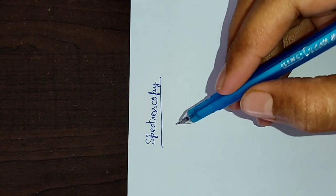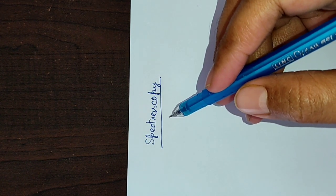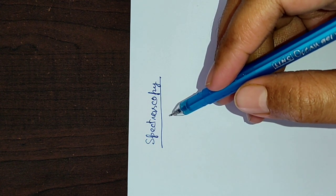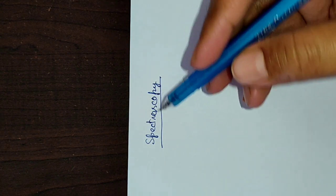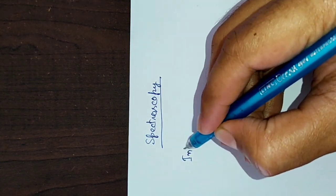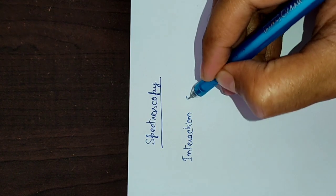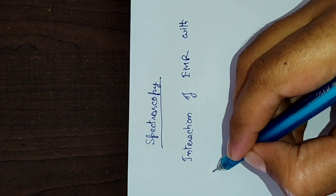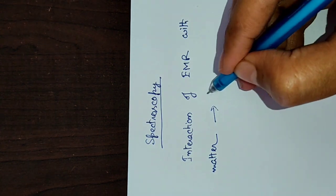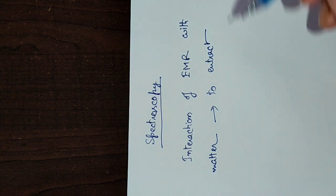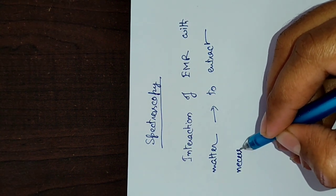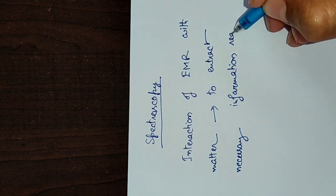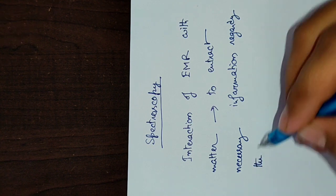I will introduce spectroscopy to you in five to six lectures before going to rotational spectroscopy or other specific spectroscopies. Now what does this term mean? Spectroscopy basically means the interaction of electromagnetic radiation with matter, and we use it to extract important information regarding the system.